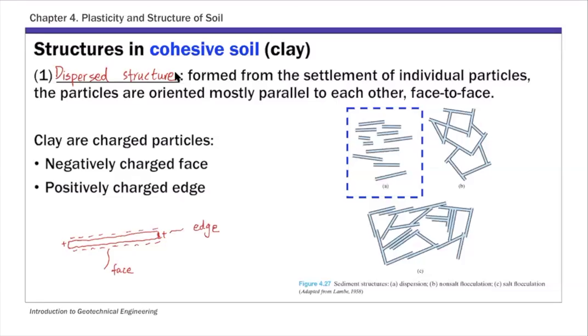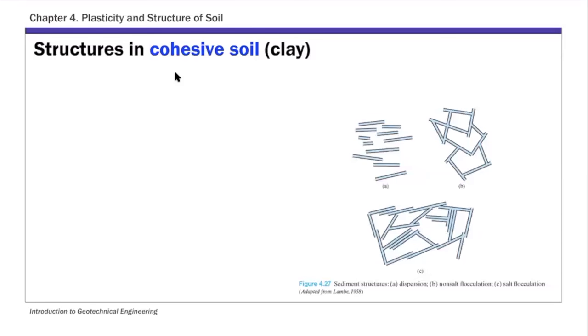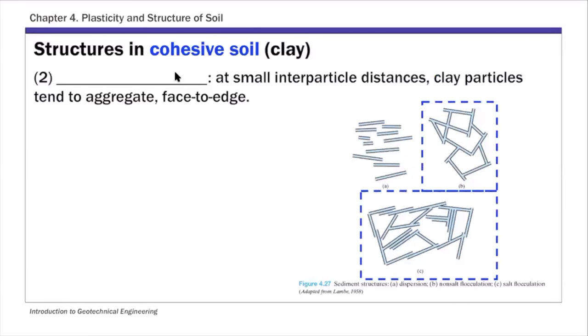And the second type, also shown in this figure here, is called flocculated structure. So this flocculated structure, as shown here, if you look at these two highlighted figures, they are in a face to edge fashion. So basically the negatively charged face is attached to or attracted to the positively charged edge. So that's a face to edge fashion. And that's called the flocculated structure.